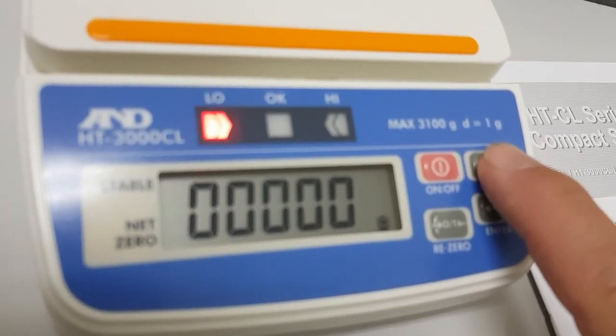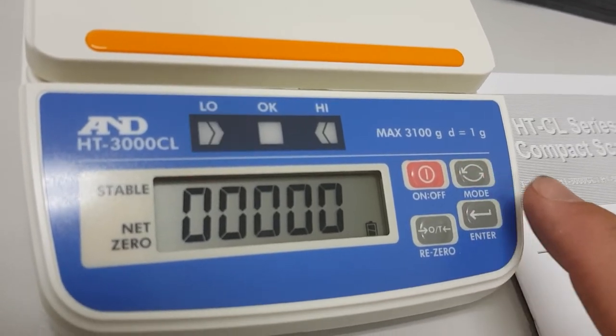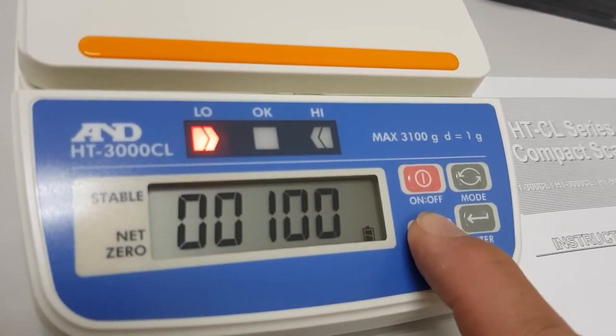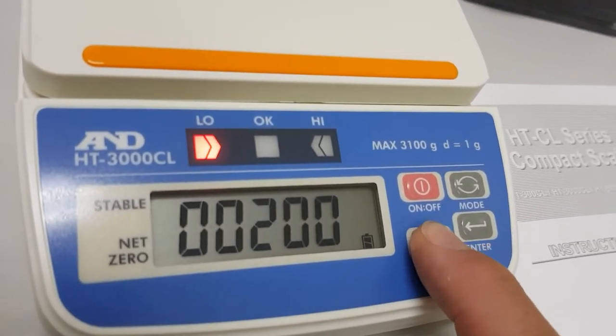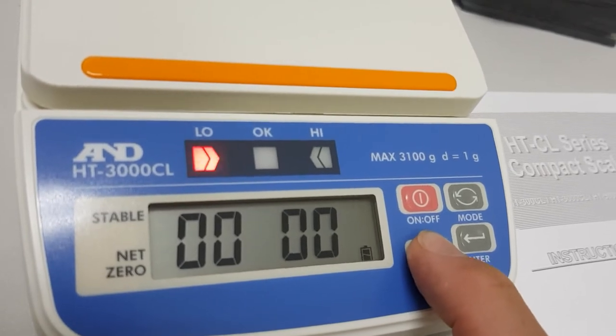Let's say we want to change this one to between 200 and 220 grams as my target packing weight. Once the digit's flashing that you want to change, press the zero button until it says the right number. If you miss it, just keep pressing it, it'll go right around and back to where you started again. So we've got 200 set as our low limit.